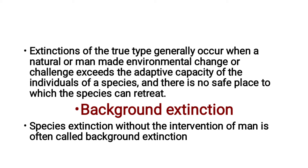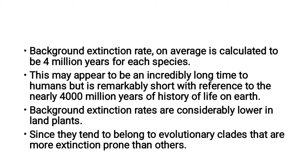The next type is background extinction. Species extinction without the intervention of man is often called background extinction. The background extinction rate on average is calculated to be 4 million years for each species. This may appear to be an incredibly long time to humans, but is remarkably short with reference to the nearly 4,000 million years of history of life on Earth. Background extinction rates are considerably lower in land plants, since they tend to belong to evolutionary clades that are more extinction-prone than others.